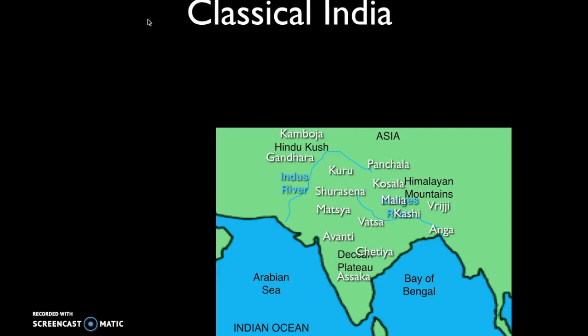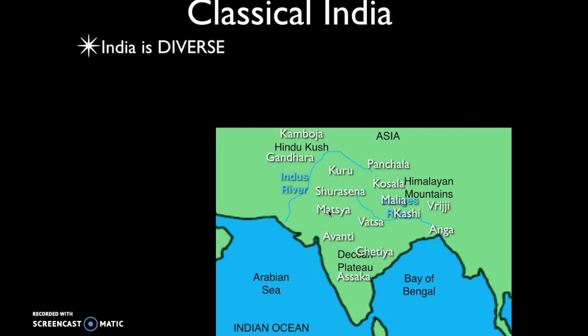It's been a while since we've been in India, so just a couple of reminders. Our mantra is: India is very diverse — linguistically diverse, ethnically diverse, religiously diverse. As a result, it was very hard to unify India politically, so for most of its history India is a collection of independent kingdoms, villages, and principalities.